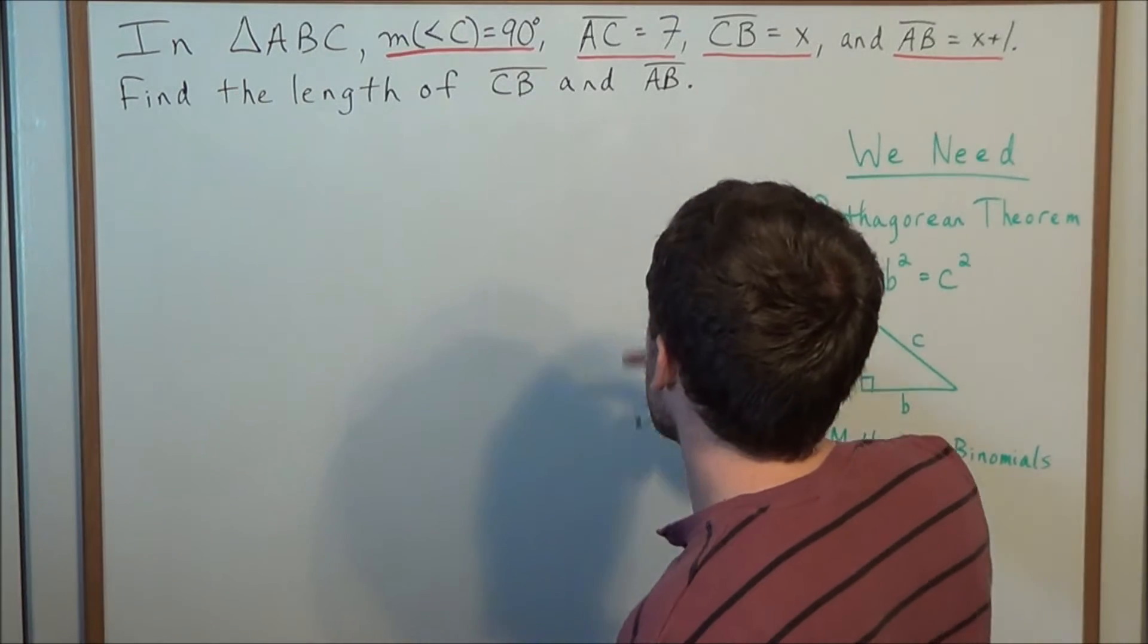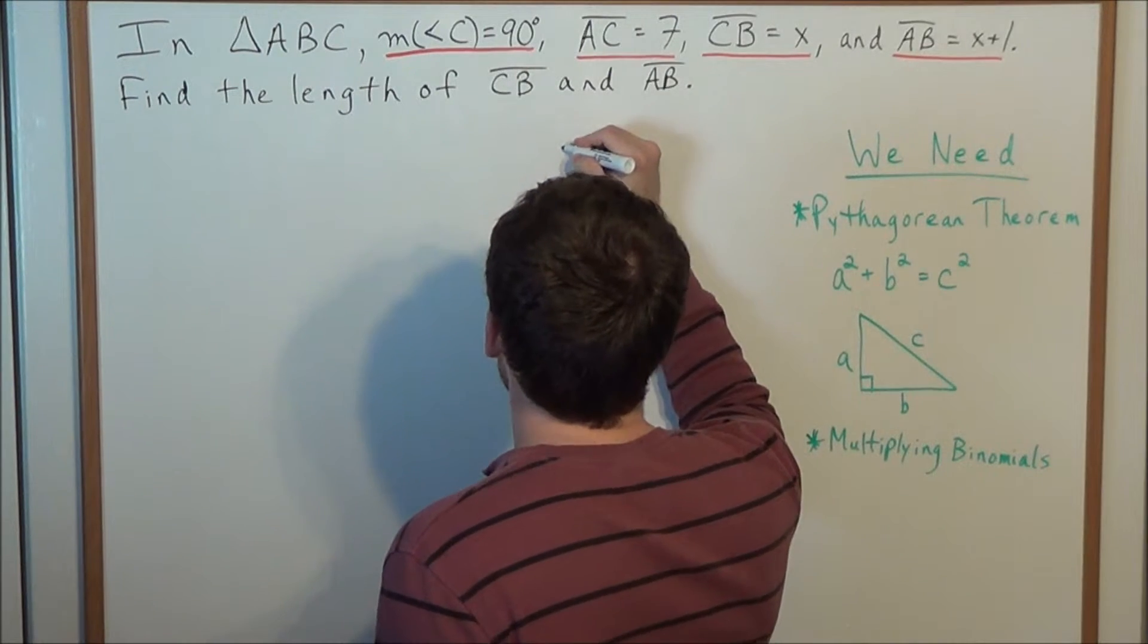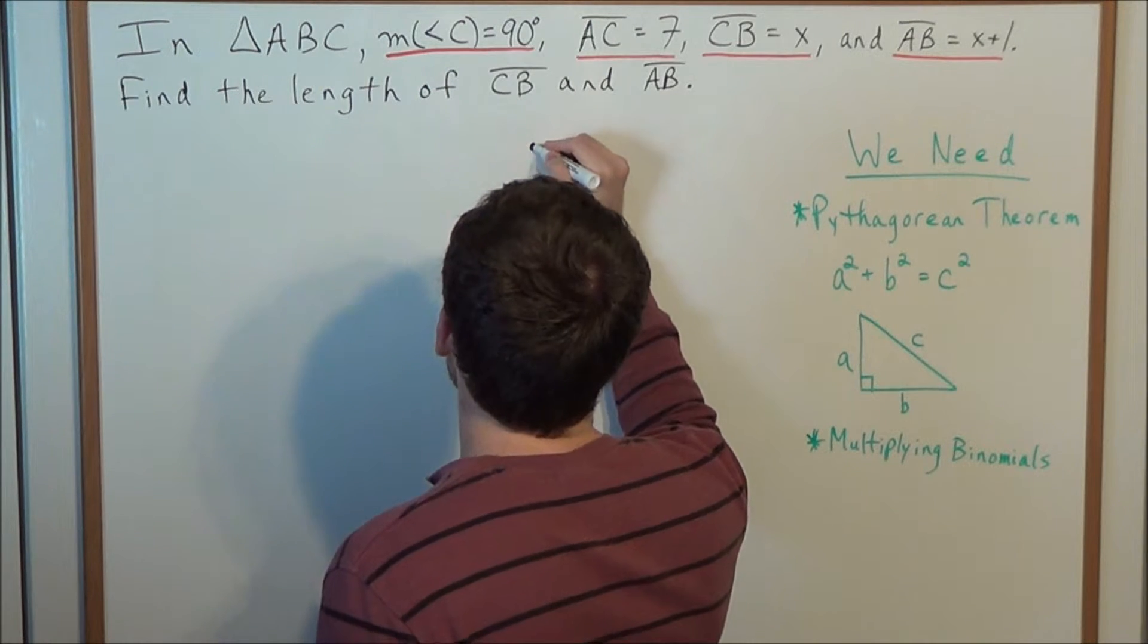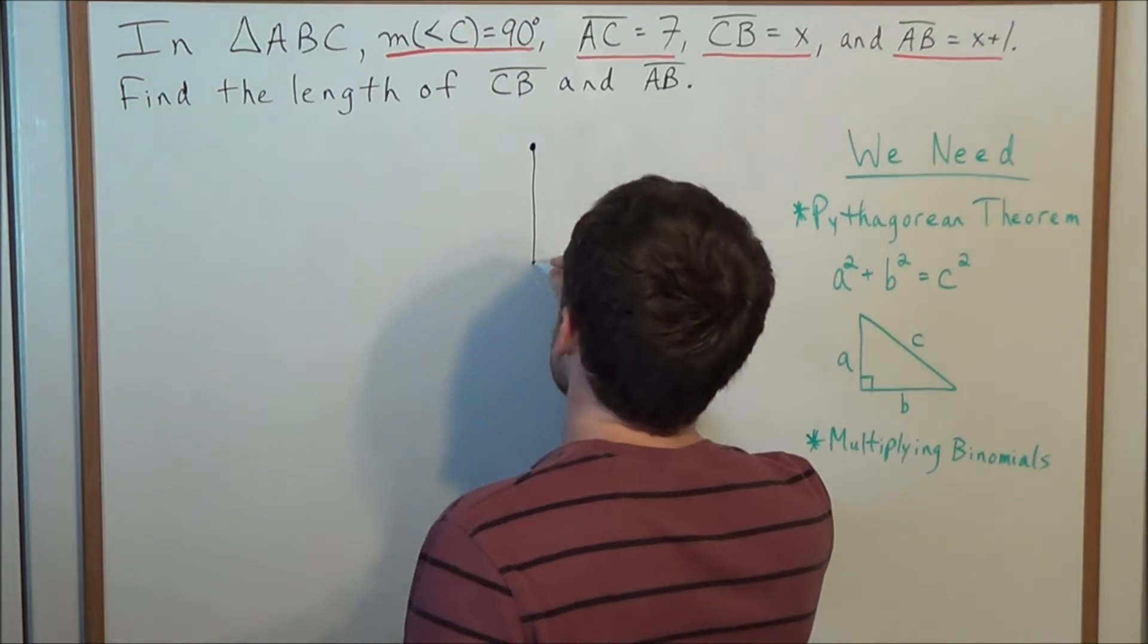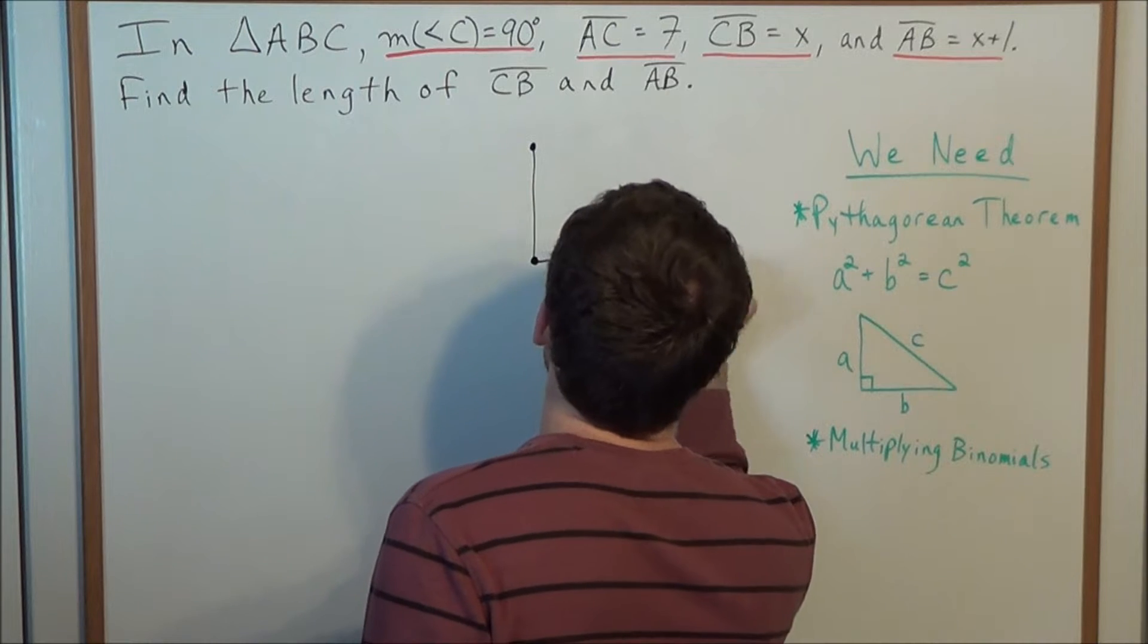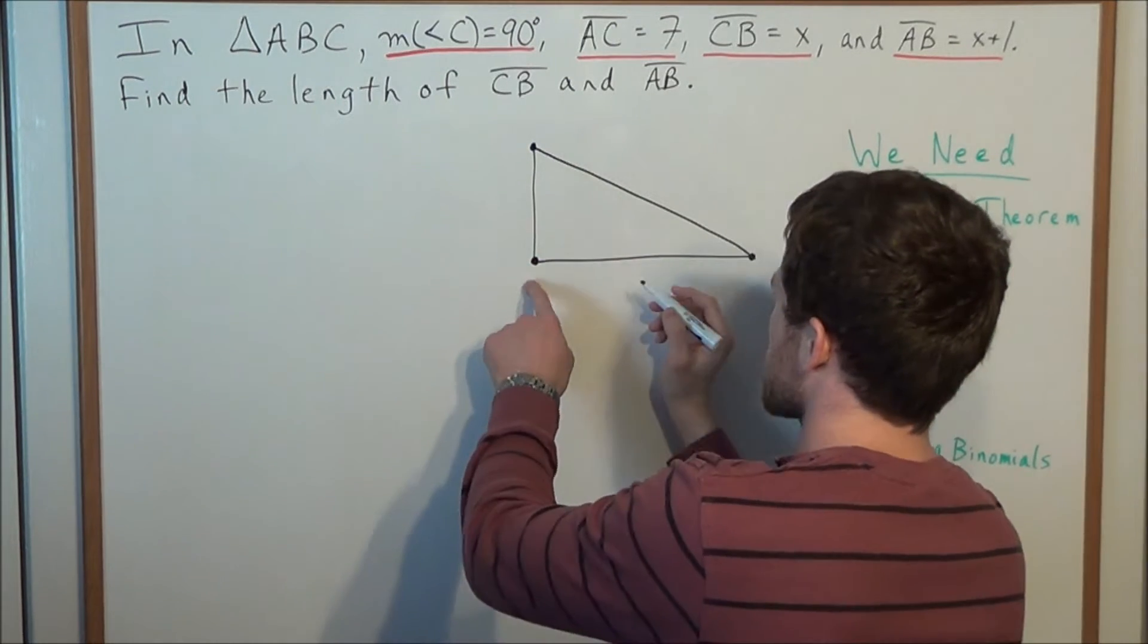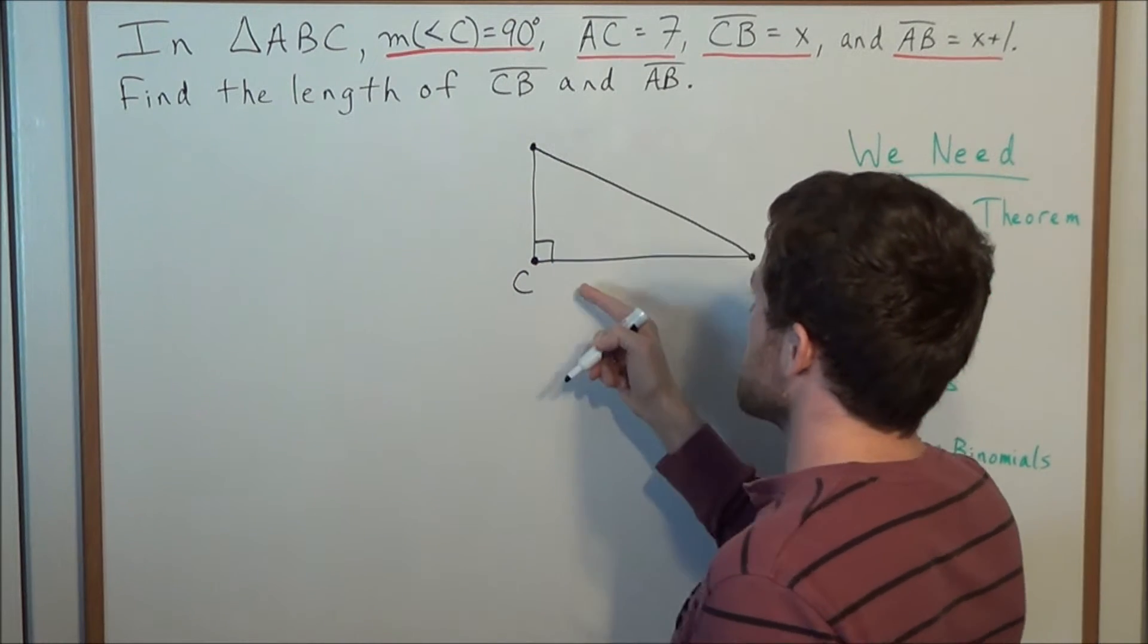So to get started let's draw a right triangle. And now with the information given we have that the right angle is located at vertex C. So when we draw this, we can label this vertex C, and this is where the right angle is going to be.